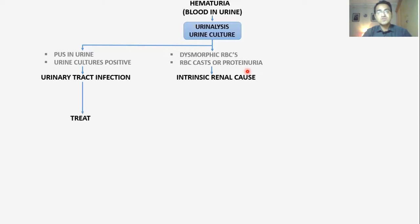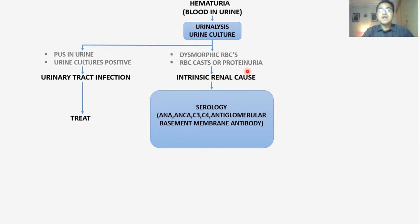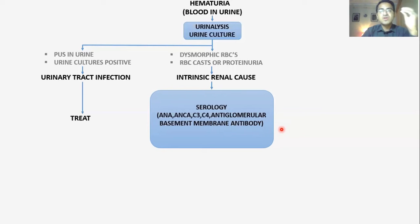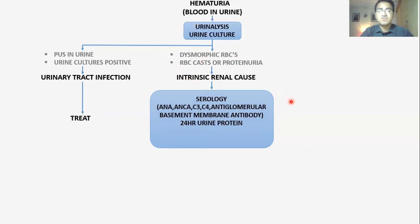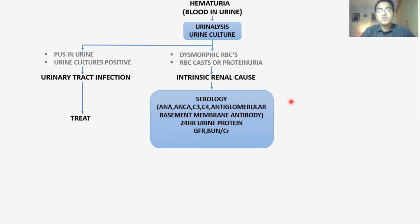To find out the intrinsic renal cause, you have to do certain tests. You can go for serology, including anti-nuclear antibodies, anti-nuclear cytoplasmic antibodies, C3, C4, and anti-glomerular basement membrane antibodies — trying to find causes of glomerulonephritis, nephritic and nephrotic syndrome. You can also go for 24-hour urine protein, GFR, BUN, and creatinine to assess filtration capacity, and renal biopsy for definitive diagnosis if needed.